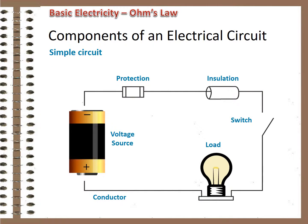Here are the components arranged in a simple circuit. When the switch is closed, current flows through the conductor and load, from the source and back to it. The insulation, which would cover all the wire, prevents short circuits, and the fuse protects from excessive current flow.